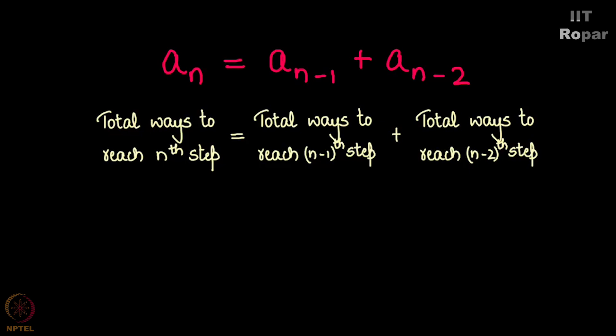Case 1 here is you go up to the (n-1)th step and take one step. Case 2 is you go up to the (n-2)th step and take a two-step leap. So a_n equals a_{n-1} plus a_{n-2}.